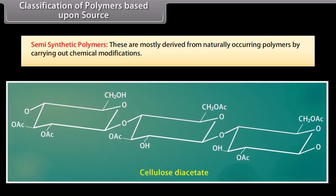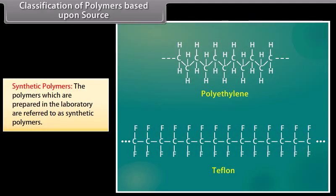Semi-synthetic polymers are mostly derived from naturally occurring polymers by carrying out chemical modifications. For example, cellulose diacetate. Synthetic polymers are prepared in the laboratory. For example, polyethylene, synthetic rubber, nylon, PVC, and teflon.